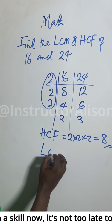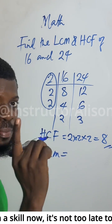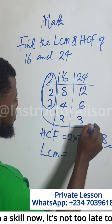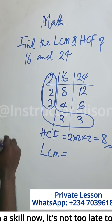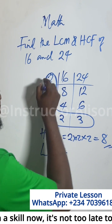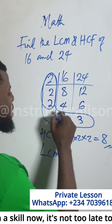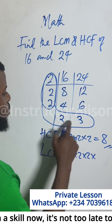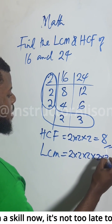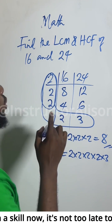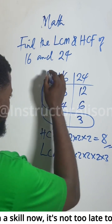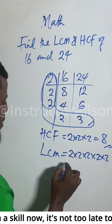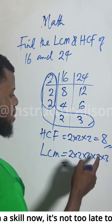For the LCM, I use the L-shape. I carry everything in the L-shape: two times two times two times two times three. That gives us the LCM — the Lowest Common Multiple — with all factors included. Two times two is four, times two is eight, times two is sixteen.